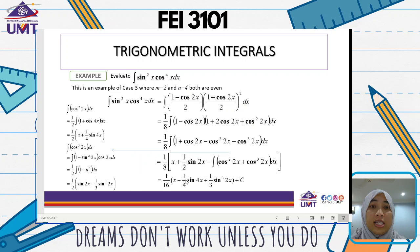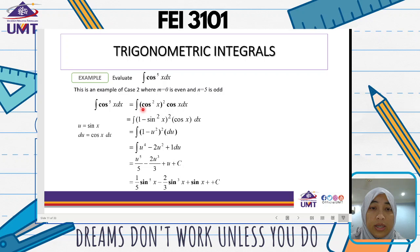This is the example of Case 3. We evaluate the integration of sin squared x times cos to the power of 4x dx, where m equals 2 and n equals 4 — both are even. We split it by writing cos to the power of 4x as cos squared x to the power of 2 times the remaining terms.